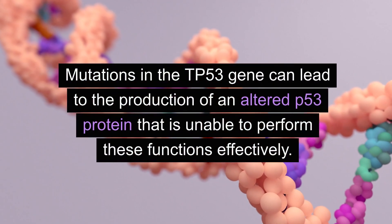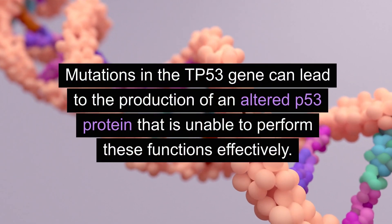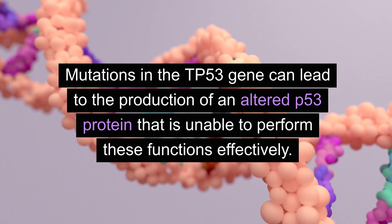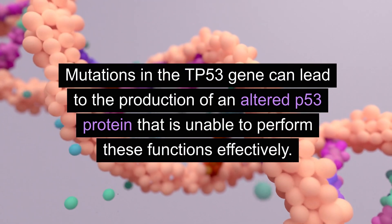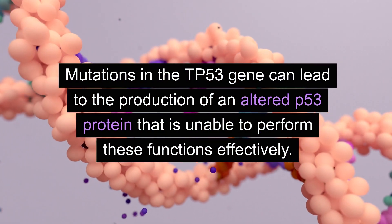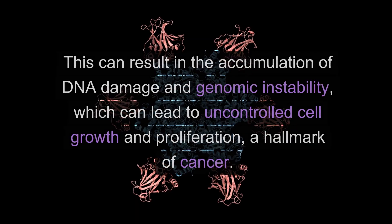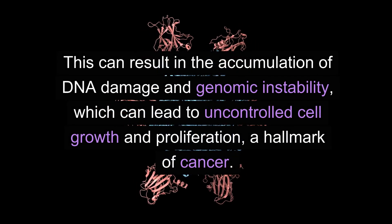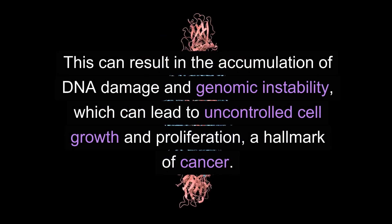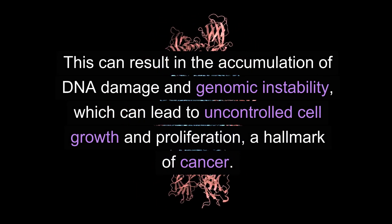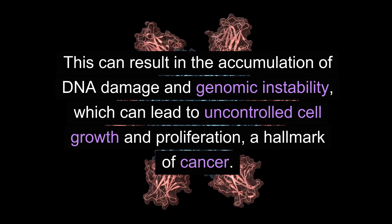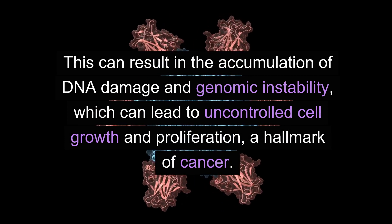Mutations in the TP53 gene can lead to the production of an altered P53 protein that is unable to perform these functions effectively. This can result in the accumulation of DNA damage and genomic instability, which can lead to uncontrolled cell growth and proliferation.